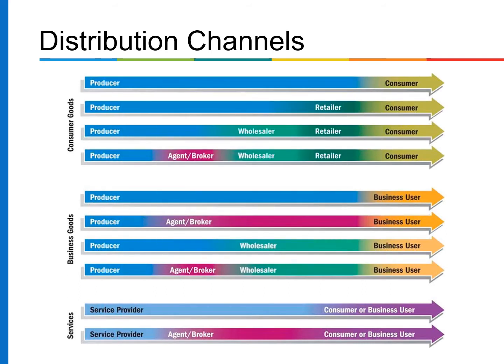No one distribution channel fits every product. Marketers must select which channel will best fit the firm and the product's needs along with their customer needs. Products — consumer products, business goods, and services — may move through a direct channel from producer.